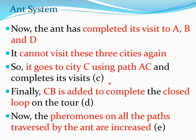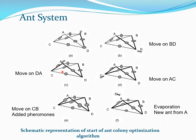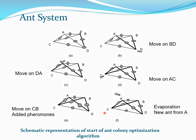From city A, the ant cannot visit B or D again, having already been there. So it goes to city C using path A→C and completes its visit. In the final step, it must return to its base, city B, completing path C→B and closing the loop. This simulates the behavior of the salesman. The circuit traveled was B→D→A→C→B, which is the optimal path for the four-city problem.